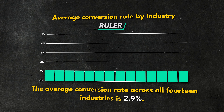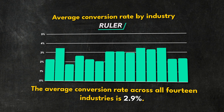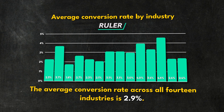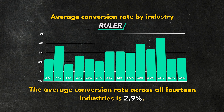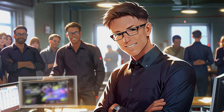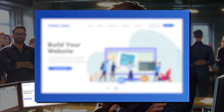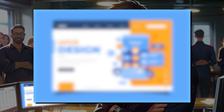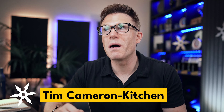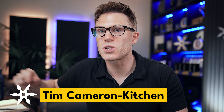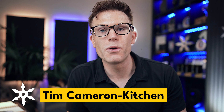According to Ruler Analytics, the average website conversion rate across 14 industries is 2.9%. Over the last 10 years, we've analyzed around 35,000 websites and we know that there are many reasons that your conversion rate for your business in your industry might be lower or higher than this. But if you want to get to and then past 2.9%, watch this video — we're going to show you exactly how to do it.